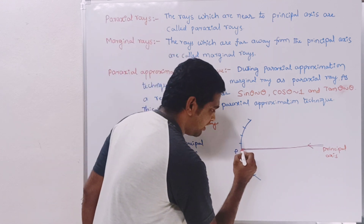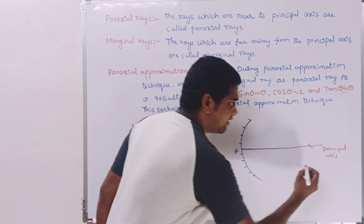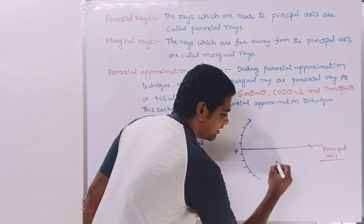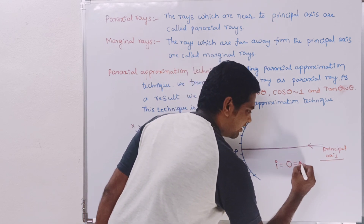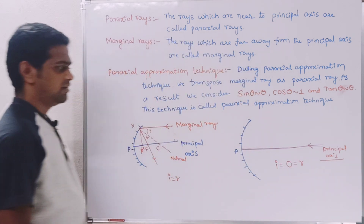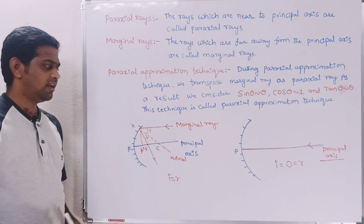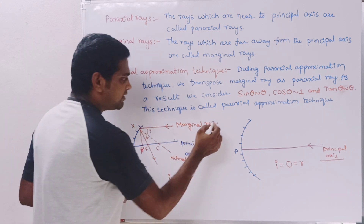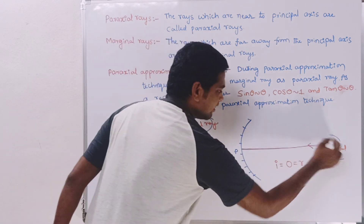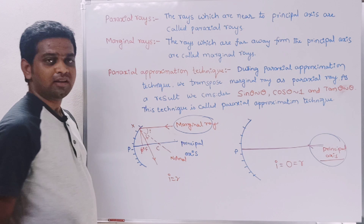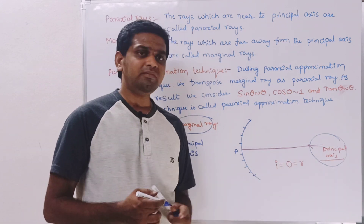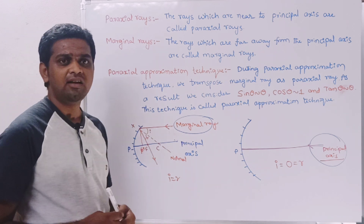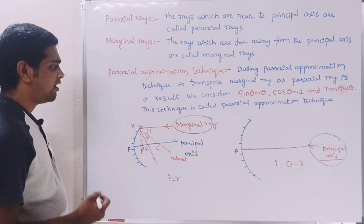For the paraxial ray situation, the normal is nothing but the principal axis itself. At this condition, the angle of incidence becomes zero, and therefore the angle of reflection also becomes zero, since angle of incidence equals angle of reflection. So whenever you transpose the marginal ray as a paraxial ray, the angle of incidence becomes zero.